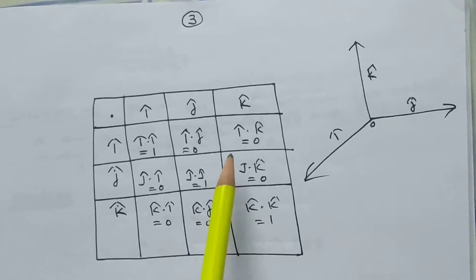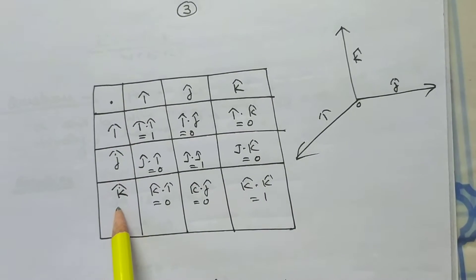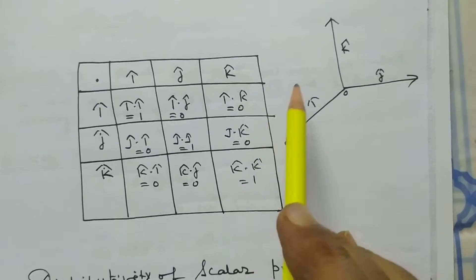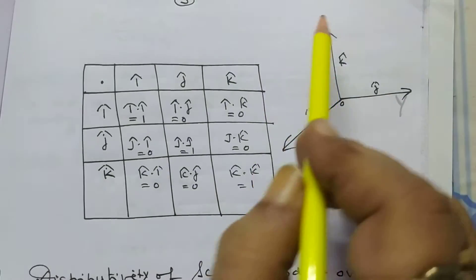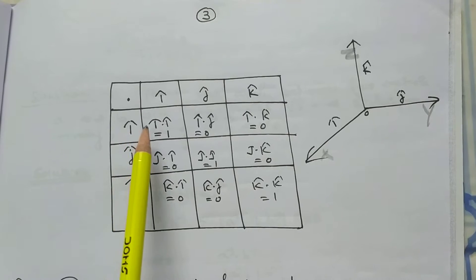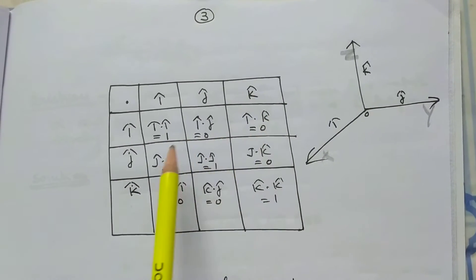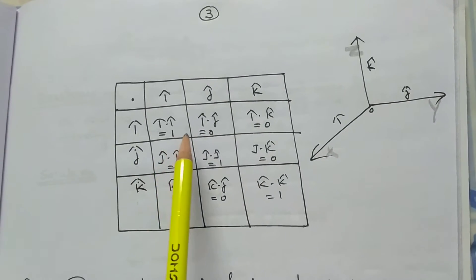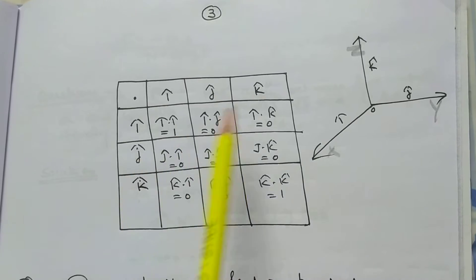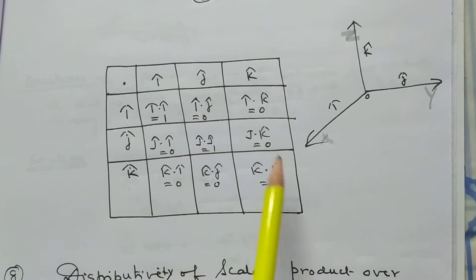This can be written in the form of a table. Write î, ĵ, k̂ in the row and î, ĵ, k̂ in the column. With î along the X-axis, ĵ along the Y-axis, and k̂ along the Z-axis: î·î=1, î·ĵ=0, î·k̂=0, ĵ·î=0, ĵ·ĵ=1, ĵ·k̂=0, k̂·î=0, k̂·ĵ=0, k̂·k̂=1.